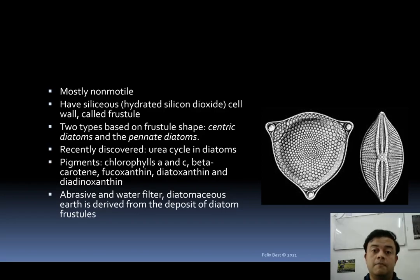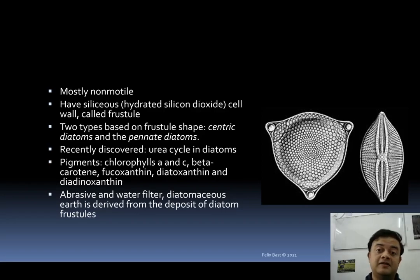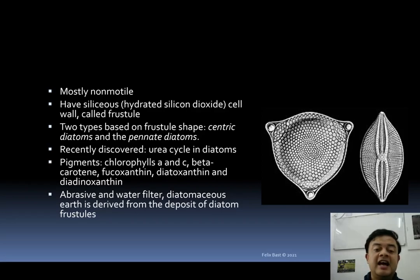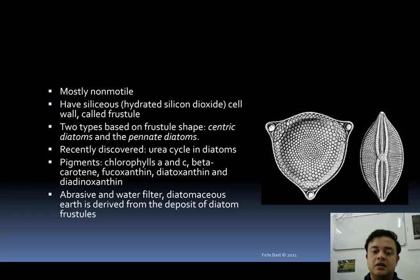Recently, the urea cycle was discovered in diatoms, which is surprising because the urea cycle is usually reserved for higher animals and birds. This is a manifestation of parallel evolution — a very exciting finding. Diatoms also contain chlorophyll a, chlorophyll c, beta-carotene, fucoxanthin, diatoxanthin, and diadinoxanthin as their pigments.